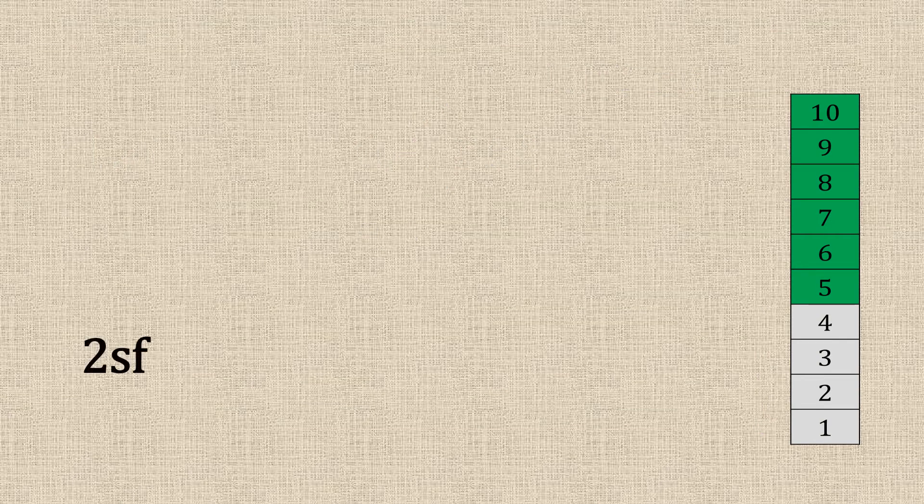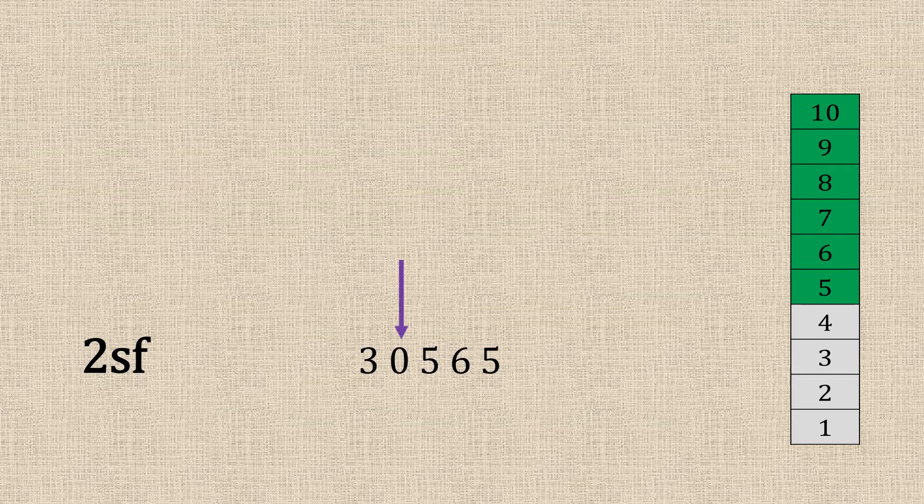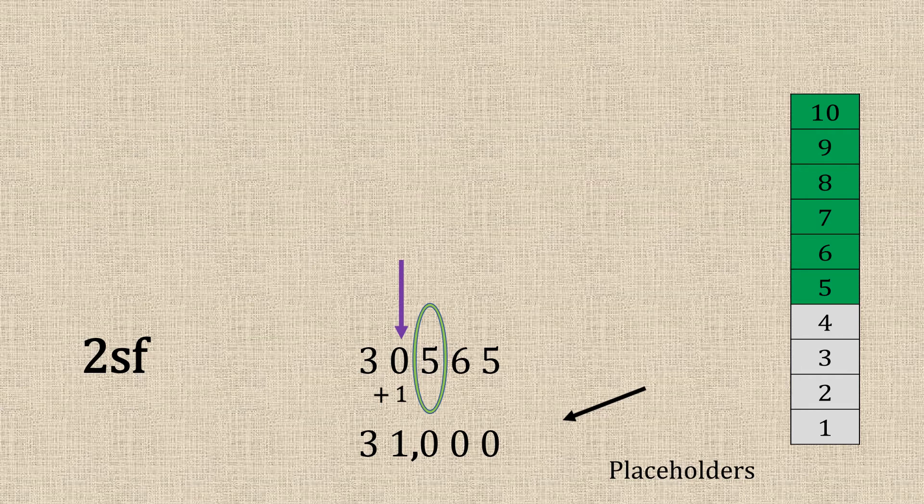Now two significant figures. So there's our number. Now our figure here is a zero. Because it's in the middle, we count it. The neighbour's five. So we add one. So that would make that 31,000. So we leave those zeros there because they're placeholders to keep the number the same.